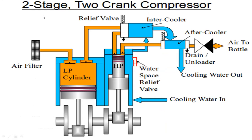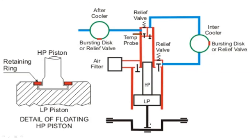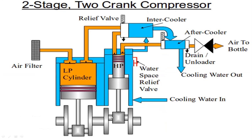So far we have seen a two-stage single-crank arrangement where both the low-pressure and high-pressure pistons are connected to a single crank. Now if we look at a two-crank arrangement, we have two cranks continuously rotating. Through the air filter, air enters the low-pressure cylinder; as the piston pushes up, pressure goes into the next stage, gets cooled, comes back to the high-pressure cylinder, and the piston again pushes it. Then it goes to the aftercooler with cooling water drain, and finally to the air bottle or reservoir. Temperature increases as air is compressed and its volume reduces.